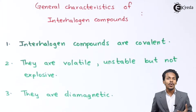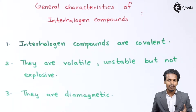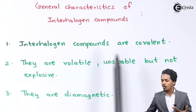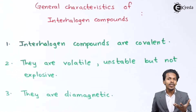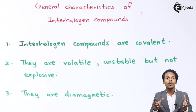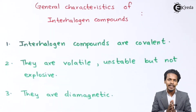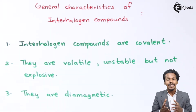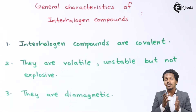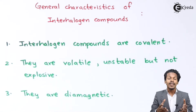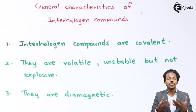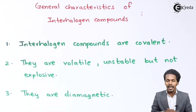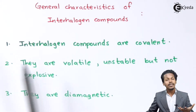In this topic I'm going to talk about the general characteristics of interhalogen compounds. Starting with the first point: interhalogen compounds are covalent in nature. The reason is that when two halogen atoms combine to form a molecule, both are electronegative, so the electronegativity difference is very much less. This is what happens when two atoms combine to form a covalent bond — there is no large difference in electronegativity.